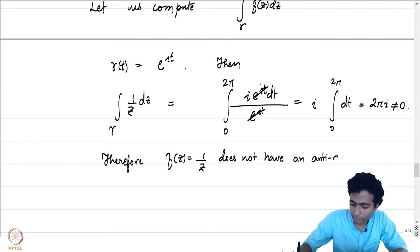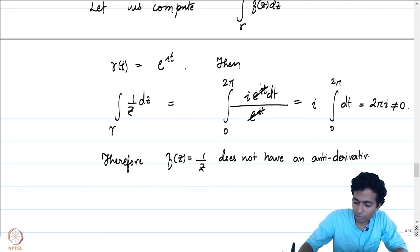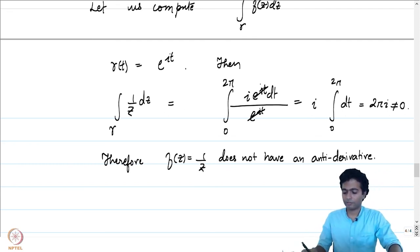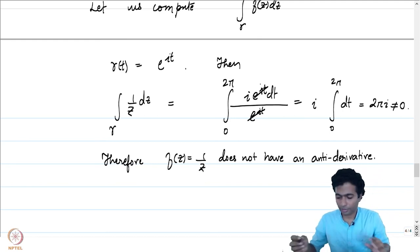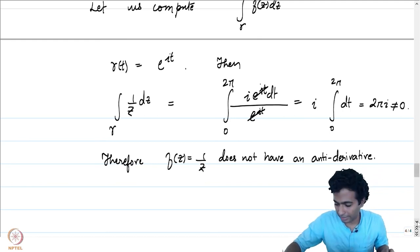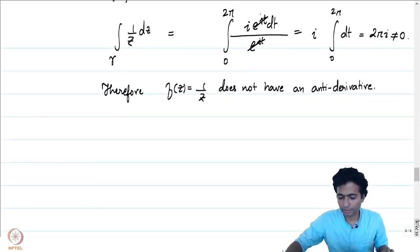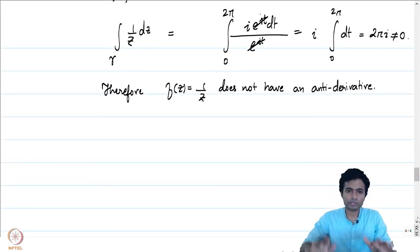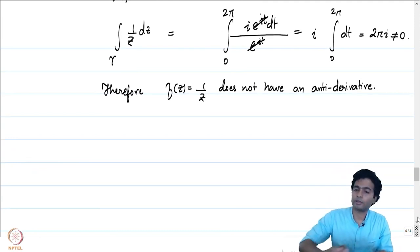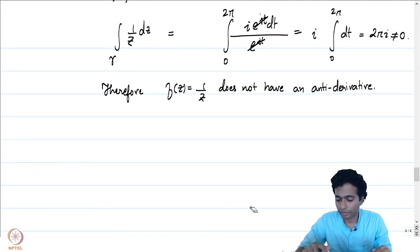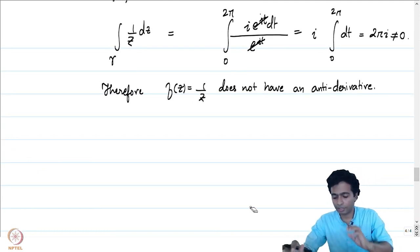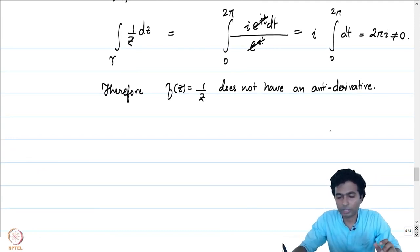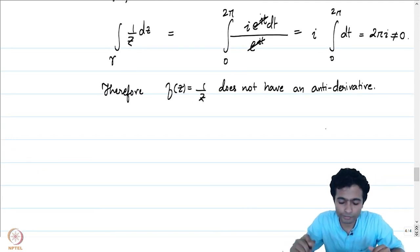We will come back to the question of when we can talk about the existence of an antiderivative of 1/z later, but on ℂ \ {0}, we have established that there is no antiderivative. There are domains where we cannot talk about the antiderivative.